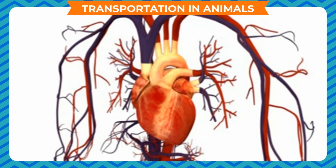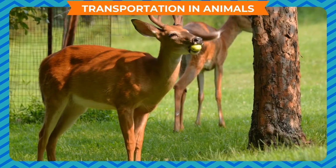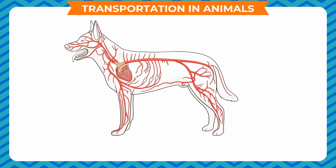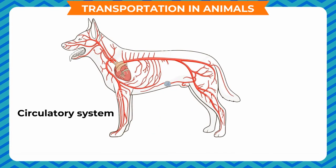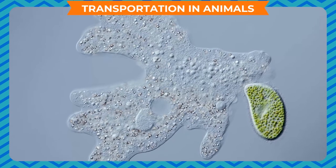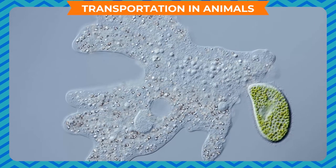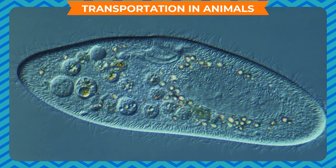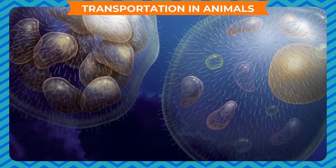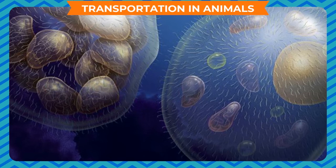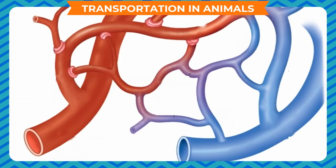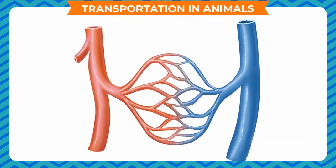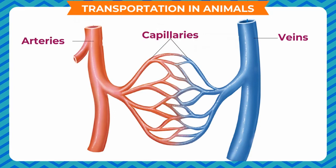Transportation in Animals: Oxygen and food have to be transported to various parts of animals, just as in plants. This system of transportation is known as the circulatory system. The circulatory system is not present in unicellular organisms like amoeba and paramecium; transportation in these organisms takes place through diffusion. In multicellular organisms, a well-developed circulatory system is present, and the medium of transportation is blood, which flows through fine tubes called blood vessels, present in the form of veins, arteries and capillaries.